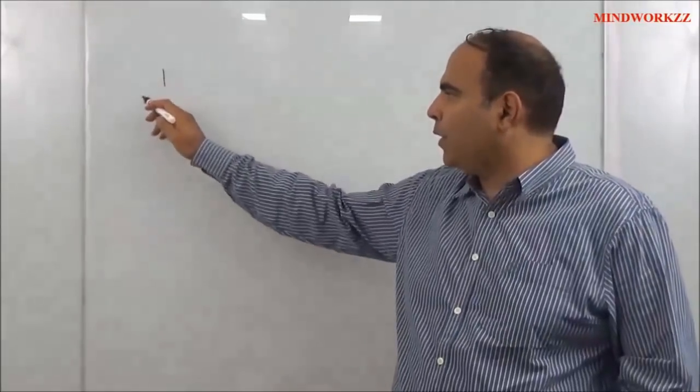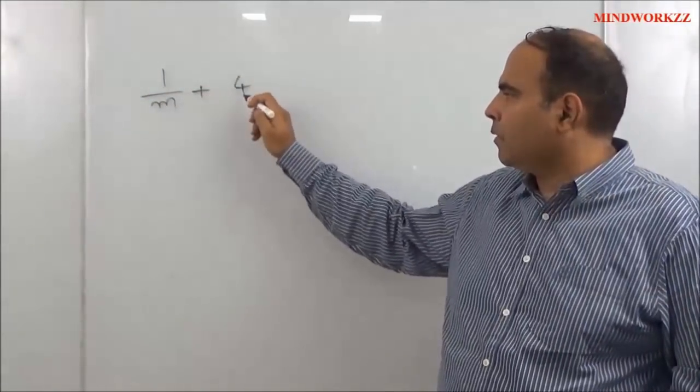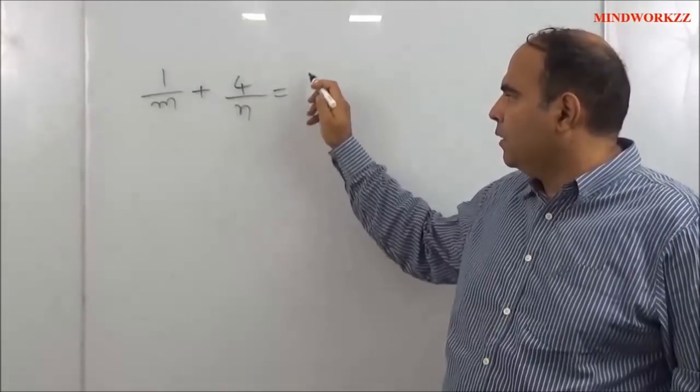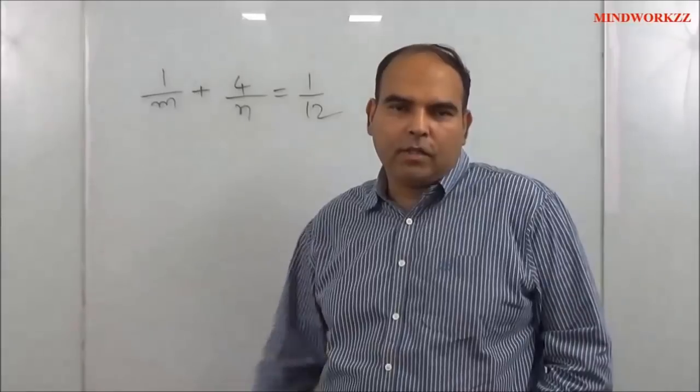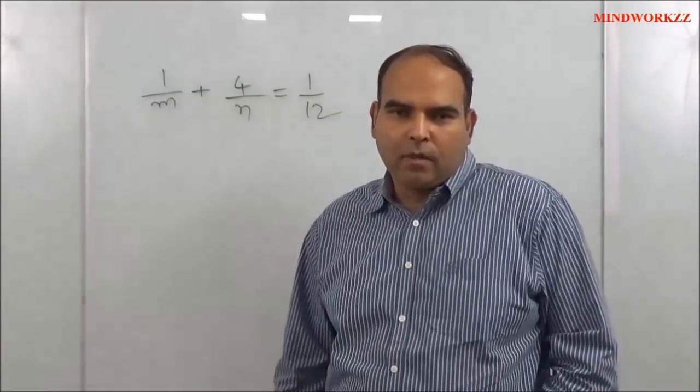Like any other question I talk about, the first thing you do in a question like this is read it properly. When you read a question like this properly, what does it tell you? It is telling you three or four messages. The first, of course, is the equation which says 1/m + 4/n is equal to 1/12. That's something the question is saying—of course you read that, but more